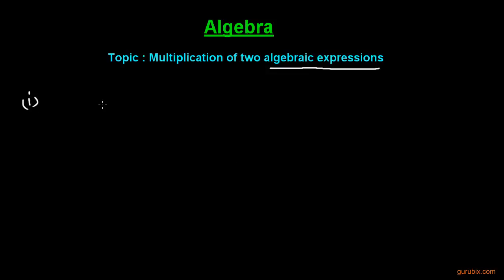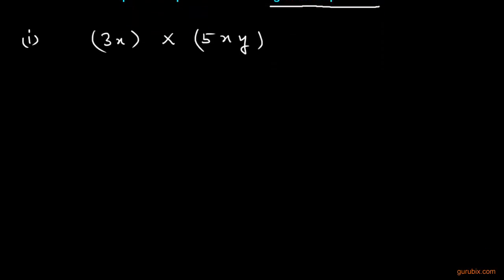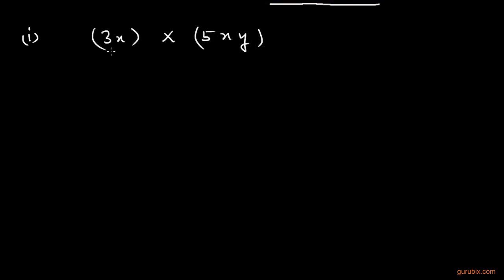Suppose we have two monomials: 3x and 5xy, and we have to multiply these two algebraic expressions. So how will we do it? Let us see. First of all, we shall multiply the coefficients — 3 into 5 — and now we shall multiply the same variable.